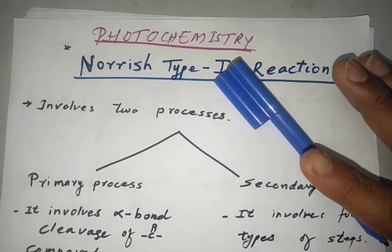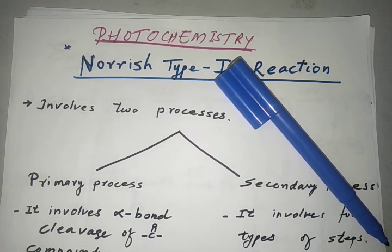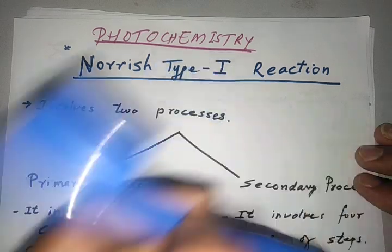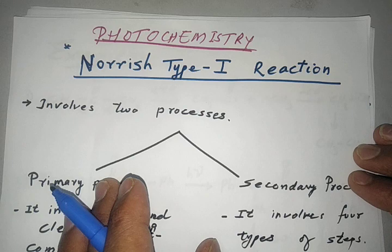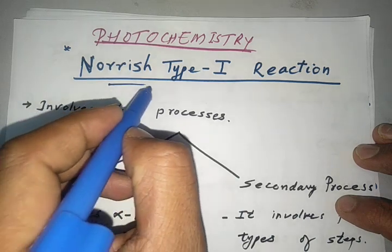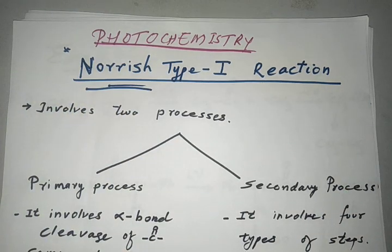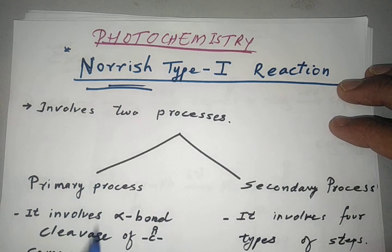Hello friends, welcome to this lecture. We are discussing organic photochemistry. Today we will take a very important part from organic photochemistry called the Norrish Type 1 reaction. The name is given by the scientist Norrish, who worked in this area. This reaction originates from environmental chemistry, where a very important compound called heptanal was studied.